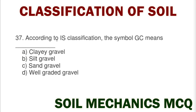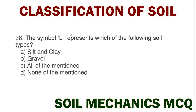Next question: according to IS classification, the symbol GC means option A clayey gravel, option B silt gravel, option C sand gravel, option D well graded gravel. The correct answer is option A clayey gravel.